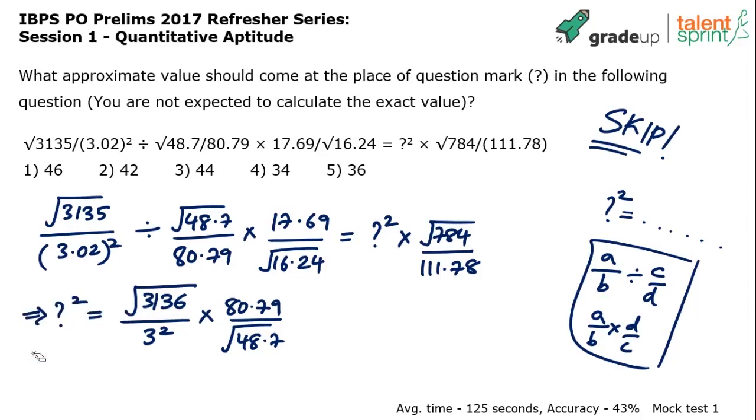Moreover, I think I'll do it a little differently. I'll write the same thing first. 3135 and this is like 3.02 whole squared. I'm copying the same question first of all. So what we have done, we have converted this division to multiplication. 80.79 divided by 48.7. Multiplication remains multiplication. And don't convert this multiplication to division. 17.69 divided by square root of 16.24.